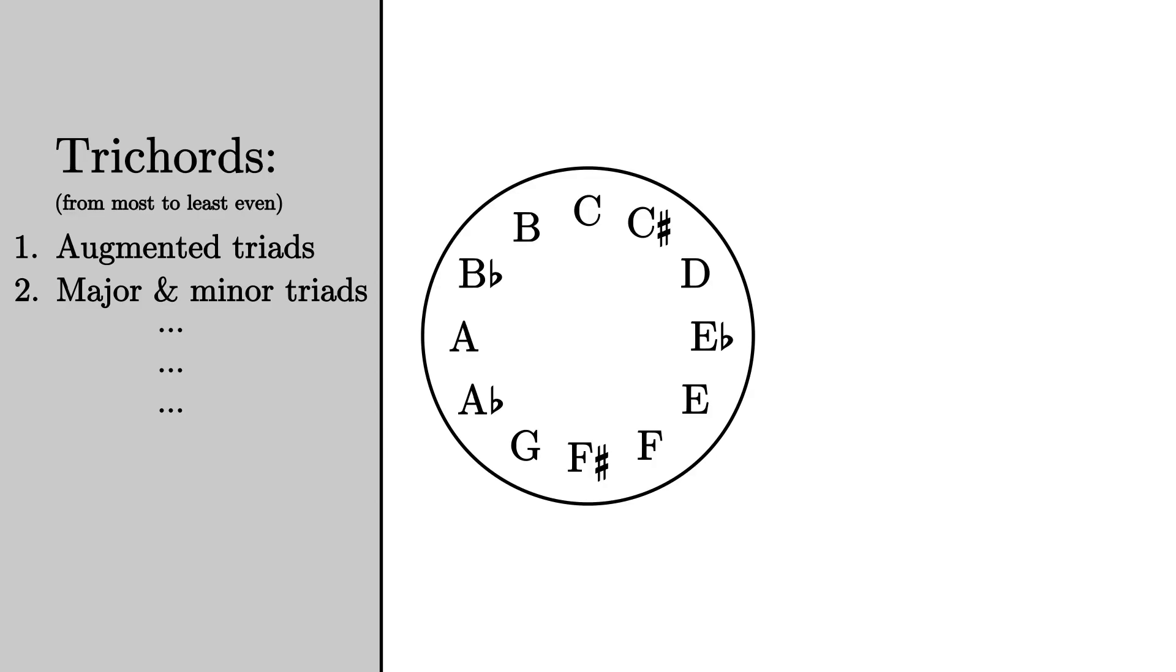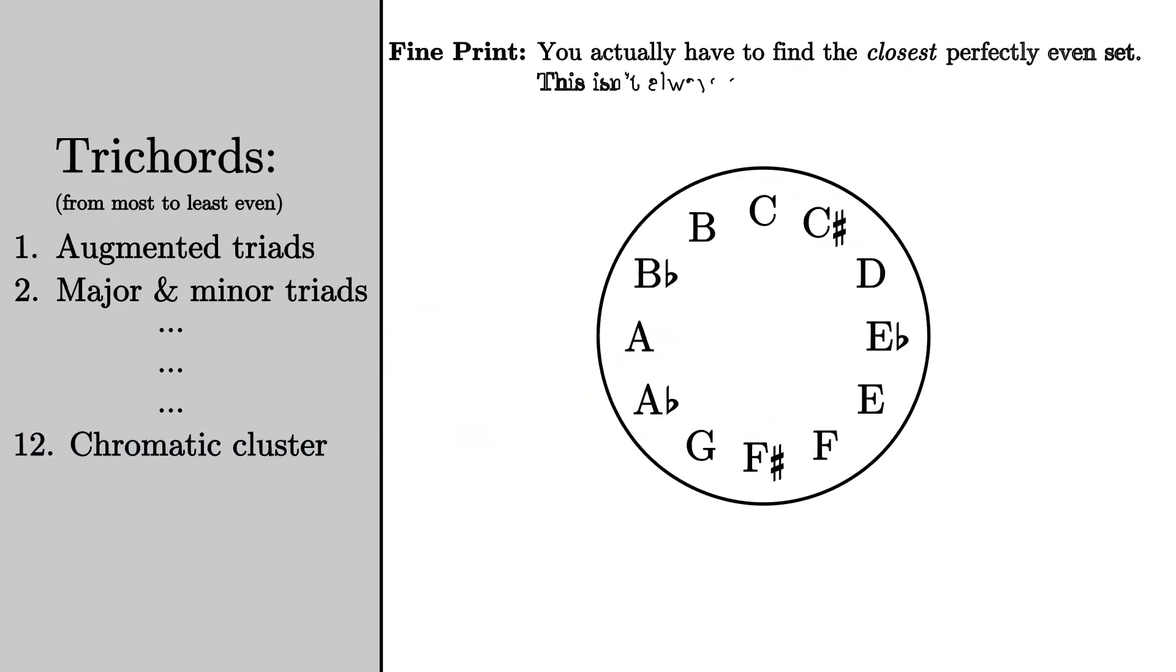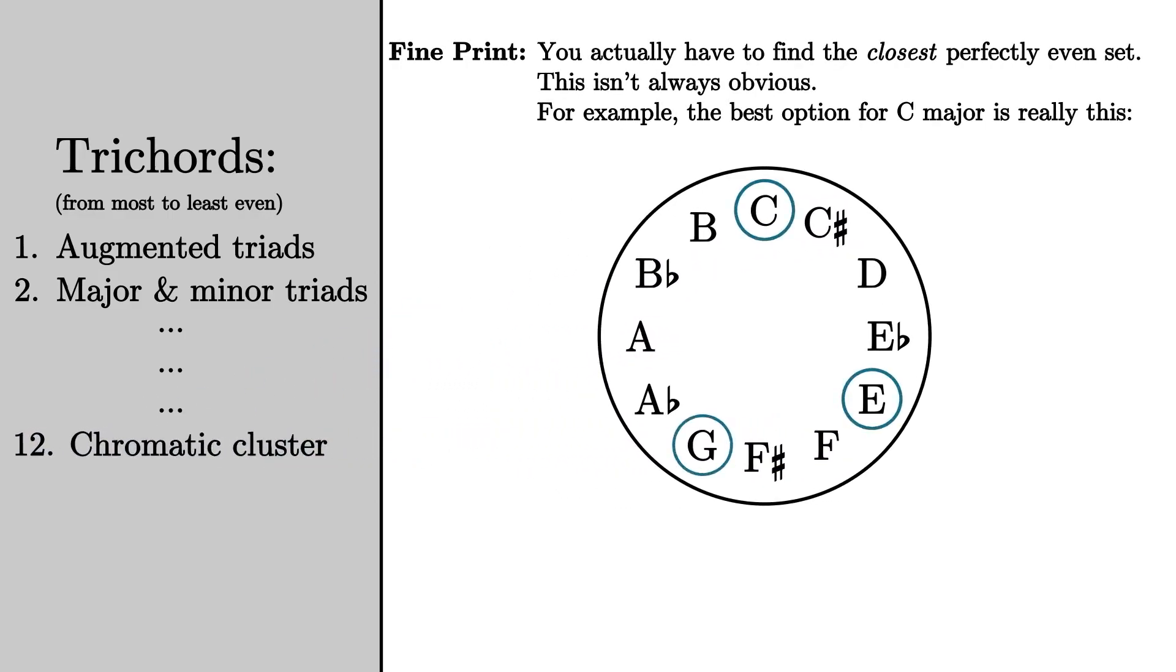In contrast, a very uneven set, like the chromatic cluster C, C-sharp D, requires me to move the notes a lot before it becomes perfectly even. I'm glossing over some mathematical details here, like how you find the most efficient way to transform any set to become perfectly even.